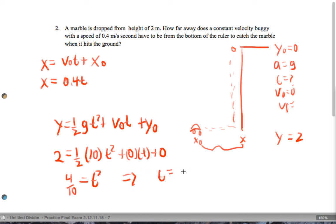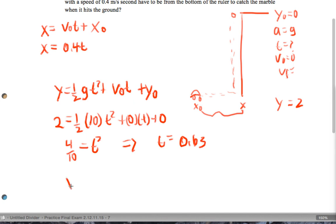And we actually get t that's going to be about 0.63 if I have my numbers right. So that means the distance the car needs to be is about 0.4 times 0.63. And when we actually multiply that out, that ends up being about 0.252 meters or about 25 centimeters away.